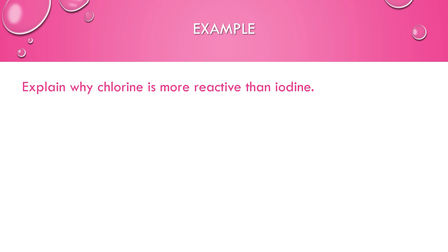Here's another example: why is chlorine more reactive than iodine? Chlorine is further up on the periodic table, but the better reason involves electron affinity. Chlorine has a stronger electron affinity than iodine because it has fewer energy levels. Iodine has more energy levels, meaning a greater distance between the nucleus and the valence electrons. Therefore, chlorine's nucleus can exert a greater attraction to outside electrons compared with iodine — that is why chlorine is more reactive.